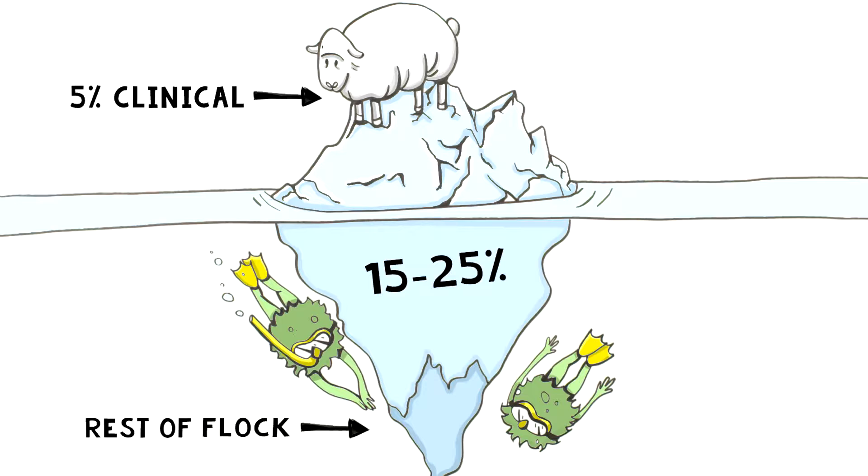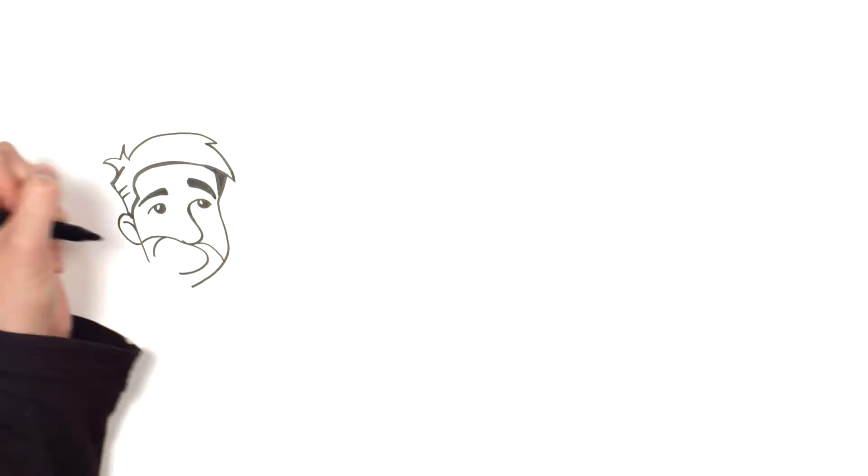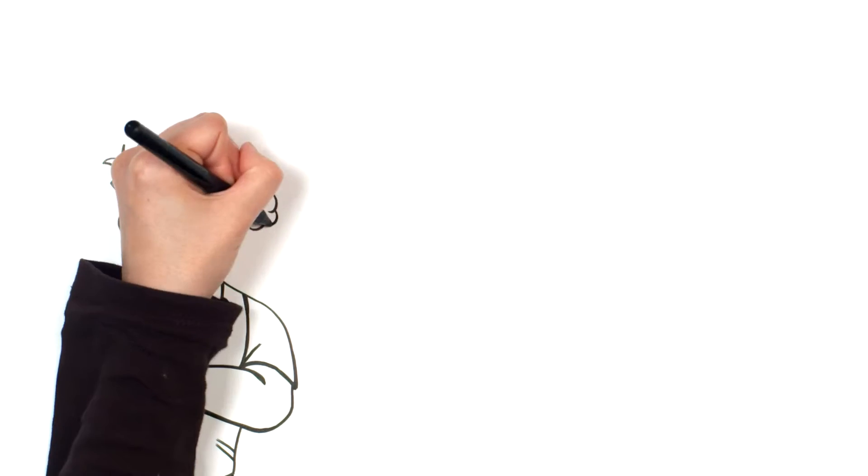What worries me most is while these infected sheep look healthy, they could be spreading MAP all over my farm. My vet calls this secret spread the subclinical phase. He says sheep can be in this stage for years. It's like I'm working in the dark. Just because the symptoms aren't there doesn't mean the infection isn't present.